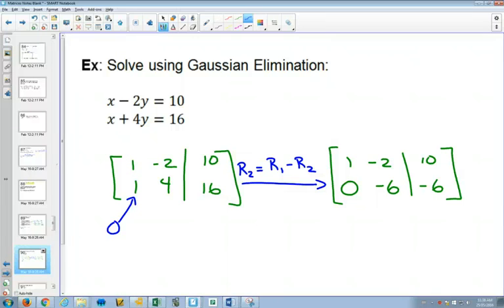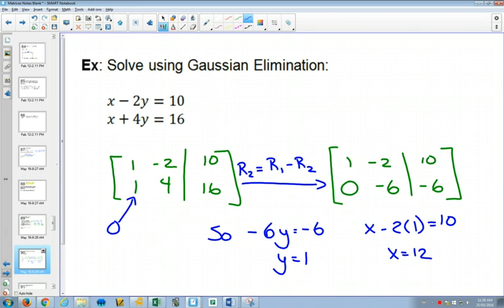So what does that mean now? So that means that negative 6y equals negative 6. And y has to equal 1. And so this Gaussian elimination is sort of a fancy way of just doing our normal elimination equation that we've done before. And now that you've got y is equal to 1, you can take your original equation. x minus 2 times 1 equals 10. So x is equal to 12. And if you want, you can plug both of those back into both equations to see that they work.